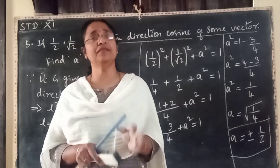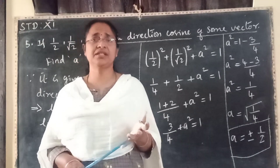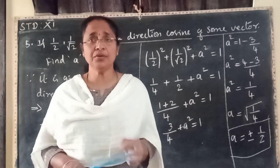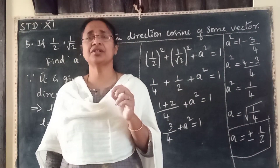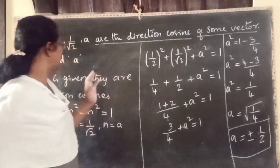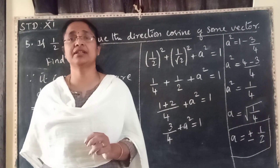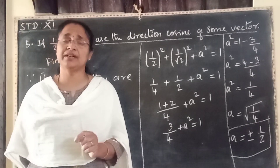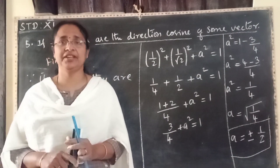So in this video we have learnt the introduction to operations of vectors: addition, subtraction, scalar multiplication, equal vectors, and we have learnt the new concepts of direction cosines and direction ratios. Direction ratios are the numbers proportional to the direction cosines — just x, y, z with coordinates. Direction cosines are x/r, y/r, z/r. Let us discuss the rest of the sums in the next video. Thank you students.